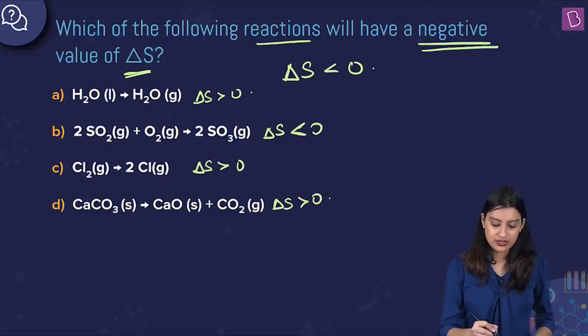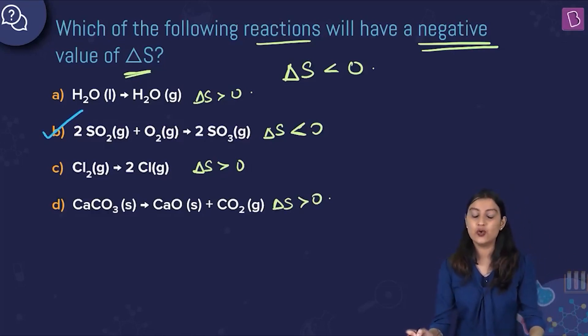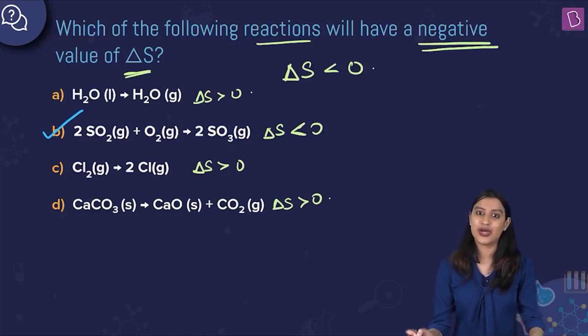Option B is the only one where delta S is less than 0, so option B is the right answer to this question.